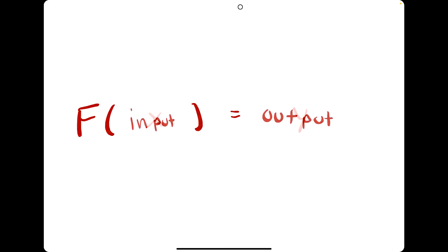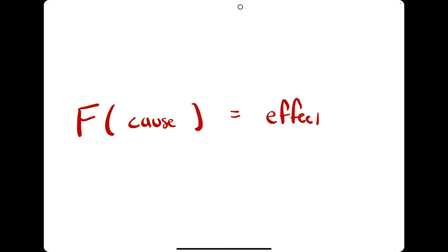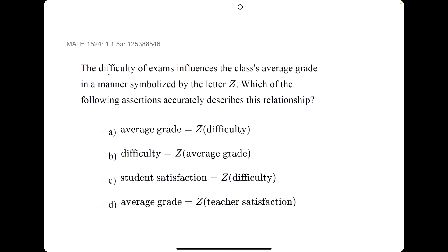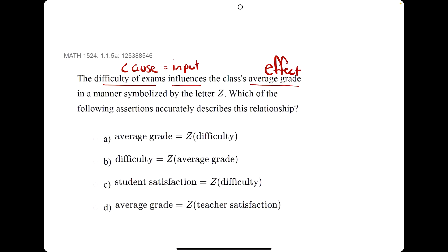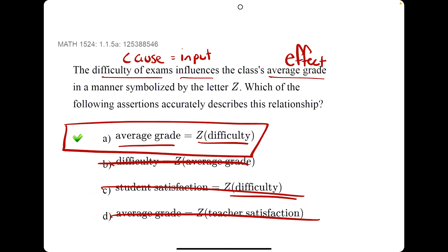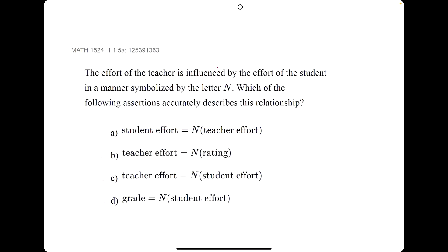In some problems you might consider x and y as your input and output, but in other problems you might consider your inputs and outputs as cause and effect. For example, they tell us the difficulty of exams influences the class's average grade. Therefore, the difficulty is the cause and the average grade is the effect. So we want to see that the cause is the input — where do we see the difficulty as the input of any of these functions, and where do we see the class's average grade as the output? Pay close attention to where they say 'influences' versus 'influenced by,' because that changes the order of cause and effect.